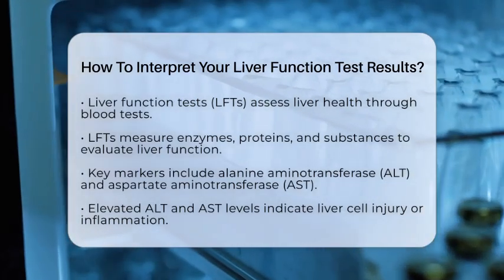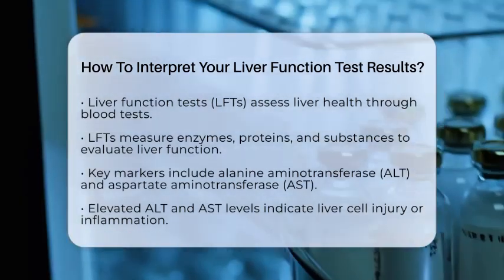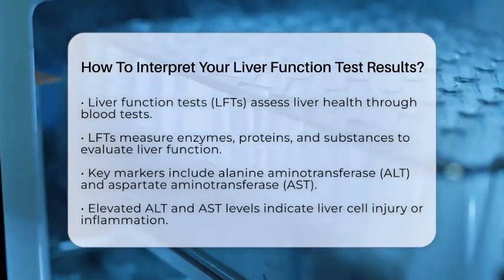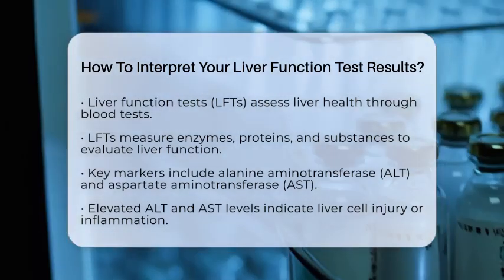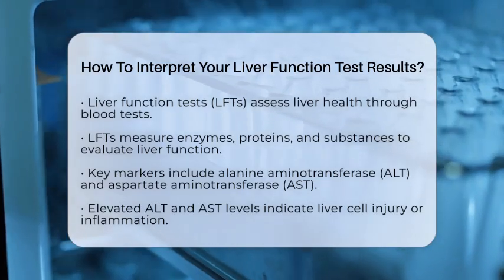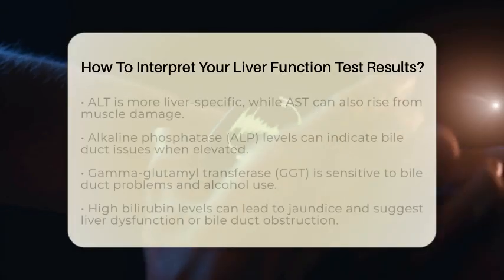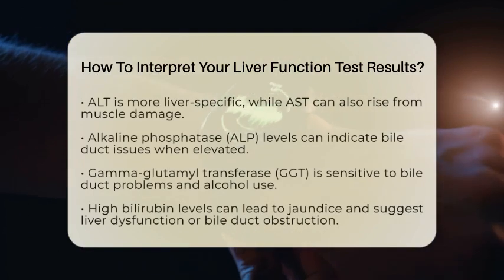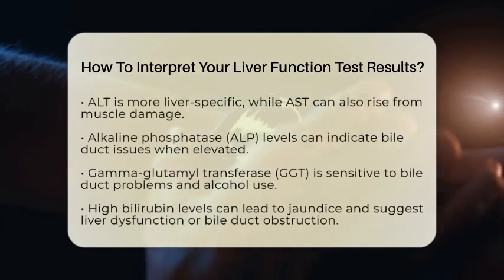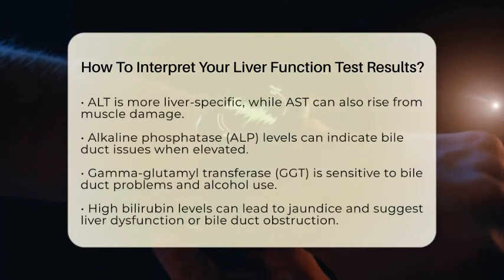Another important marker is Alkaline Phosphatase, or ALP. Elevated levels of ALP can suggest issues with bile ducts, such as obstruction or cholestasis. Gamma-glutamyl transferase, or GGT, is another enzyme sensitive to bile duct problems and alcohol use. A rise in GGT alongside ALP can indicate cholestatic liver disease.